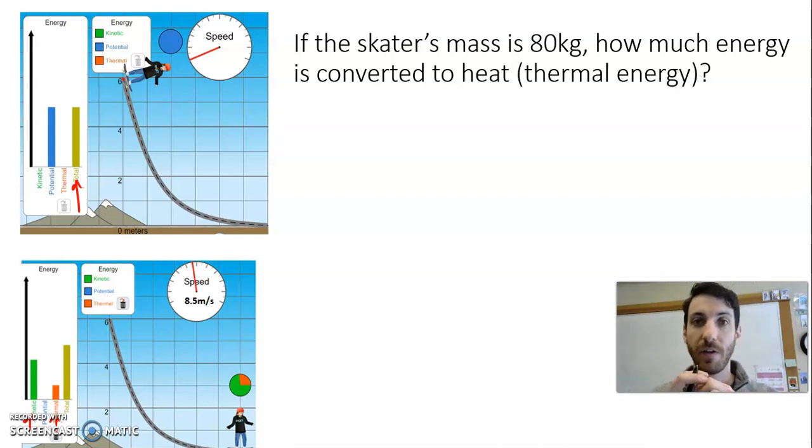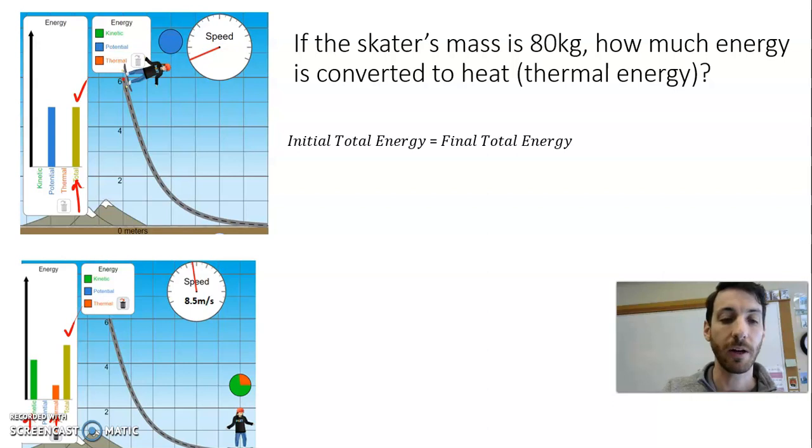Again, the conservation of energy—probably the most fundamental principle of this—is these two yellow bars are exactly the same; the total amount of energy doesn't change. We can write that as a mathematical expression: the initial total energy is equal to our final total energy. These two yellow bars have not changed.